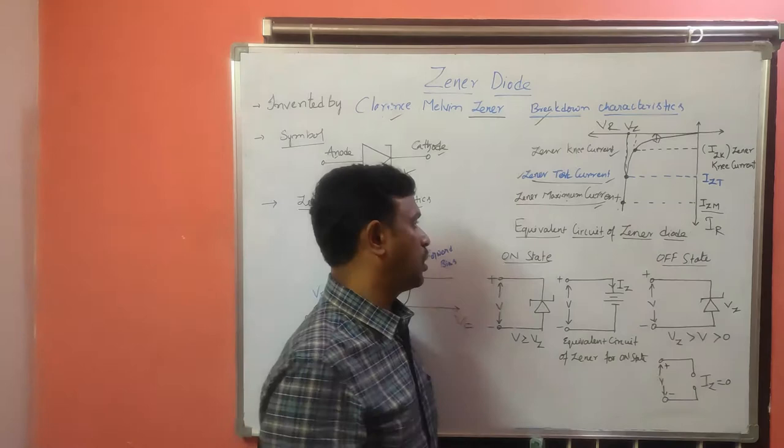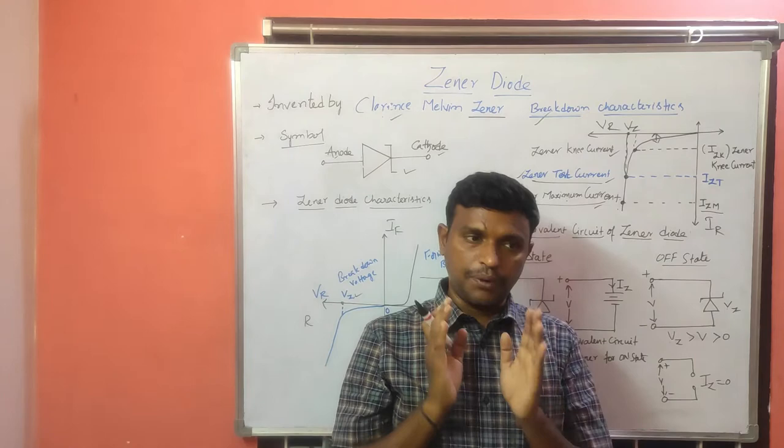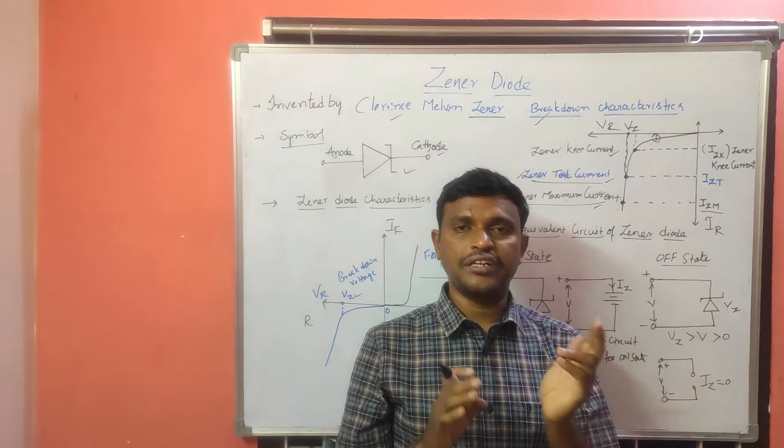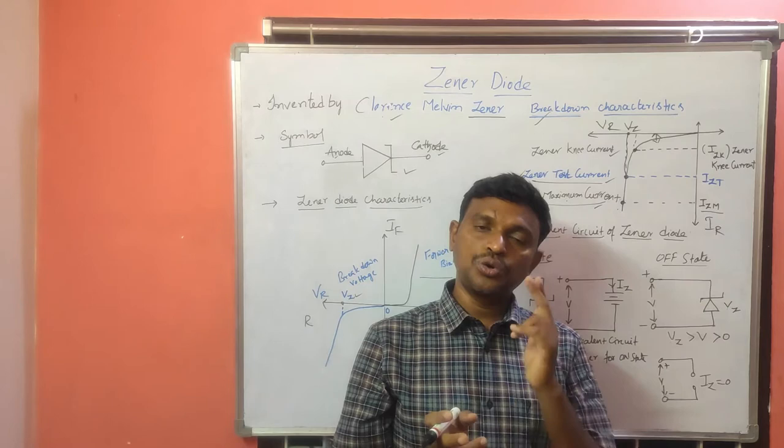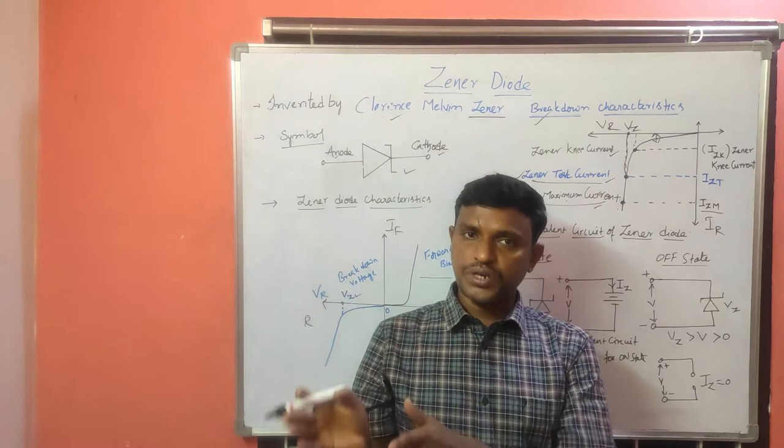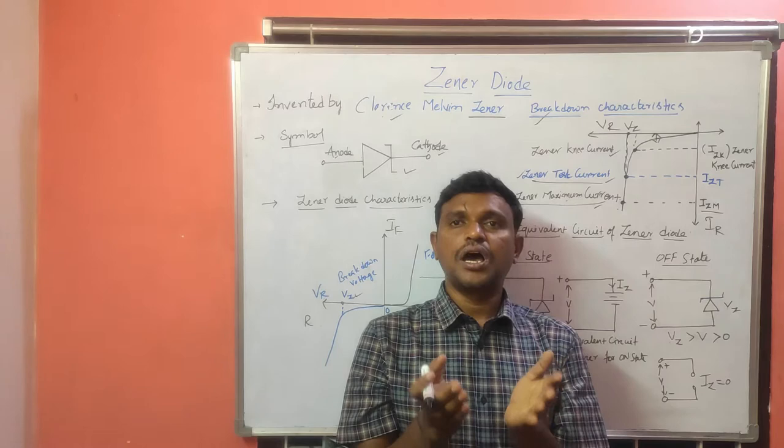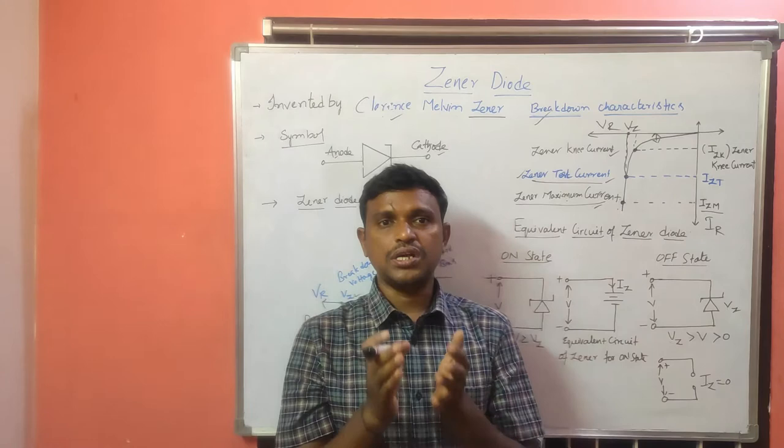Generally, a PN junction diode can be operated as an ON switch and an OFF switch. Here also we have two states for the GINA diode: the ON state of the GINA diode and the OFF state of the GINA diode. We will see what each state means and what equivalent circuit we can use to replace it.